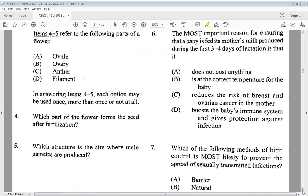5 says, which structure is a site where male gametes are produced. Whichever way you pronounce it. But we know that the answer is C, anther.